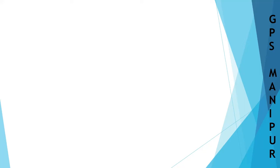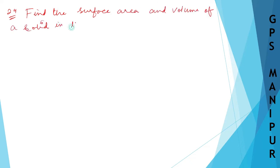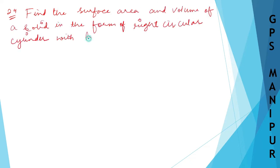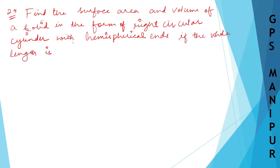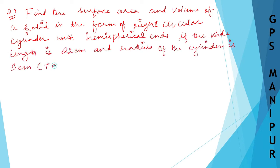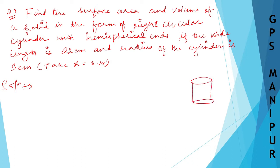We are doing exercise 12.3, question number 24. Find the surface area and volume of a solid in the form of a right circular cylinder with hemispherical ends. So there is a cylinder, and it has hemispherical ends — like this on the top and also on the bottom.